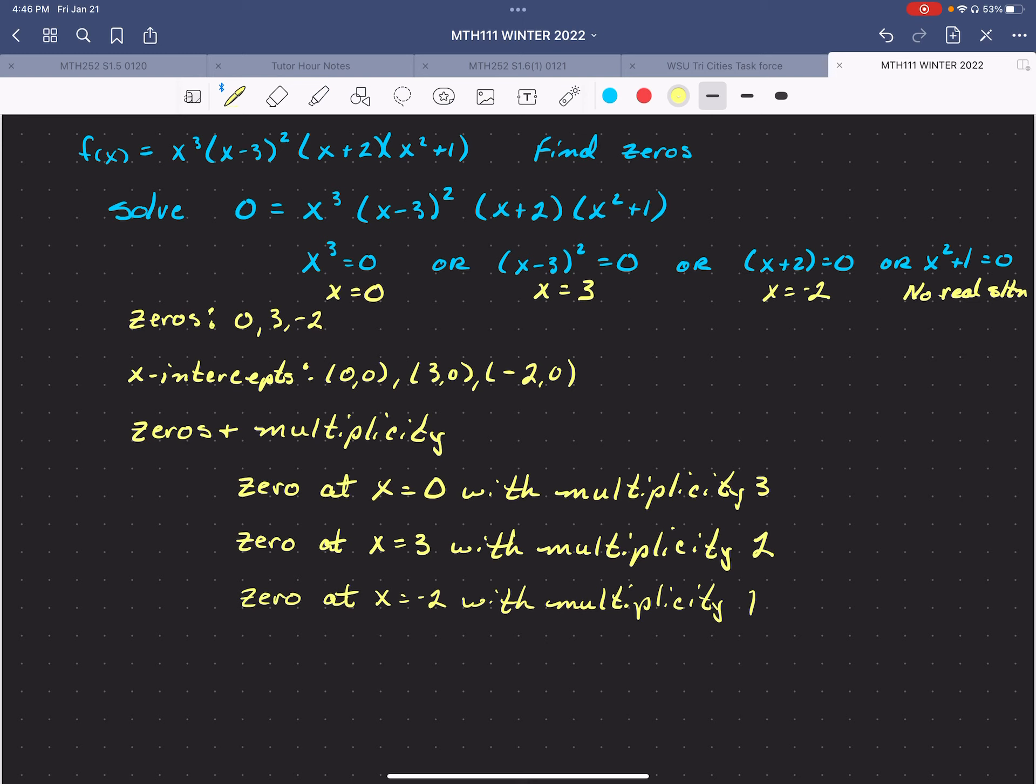And remember, in the vicinity of the 0 at 0, this thing kind of looked like a cubic. And in the vicinity of x equals 3, this thing kind of looked like a quadratic. And in the vicinity of negative 2, it looked like a straight line.